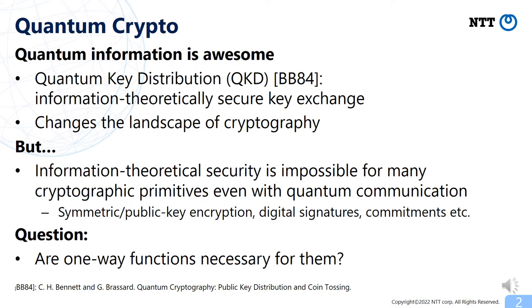Quantum information is awesome. One of the most surprising applications of quantum information in the context of cryptography is the quantum key distribution proposed by Bennett and Brassard in 1984. This is an information-theoretically secure key exchange protocol using quantum communication. Information-theoretically secure key exchange is impossible in the classical world, so this changes the landscape of cryptography.